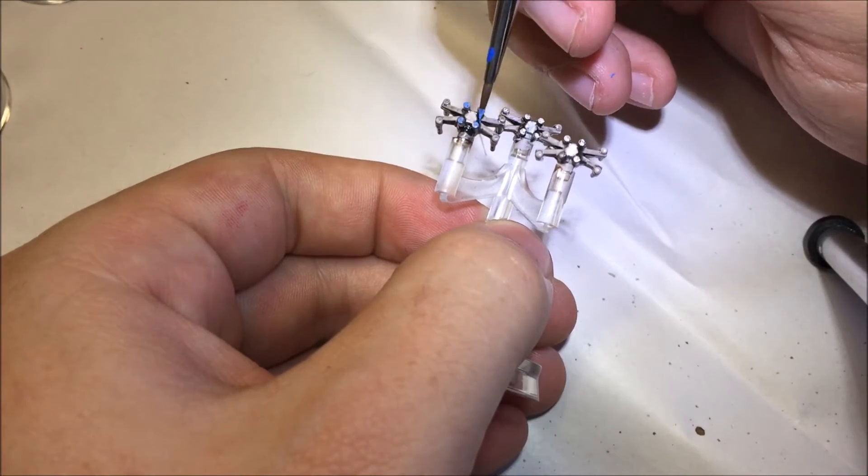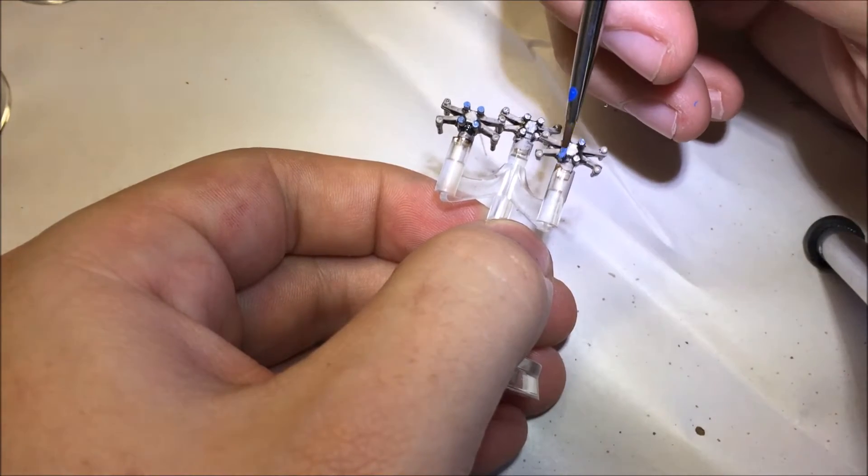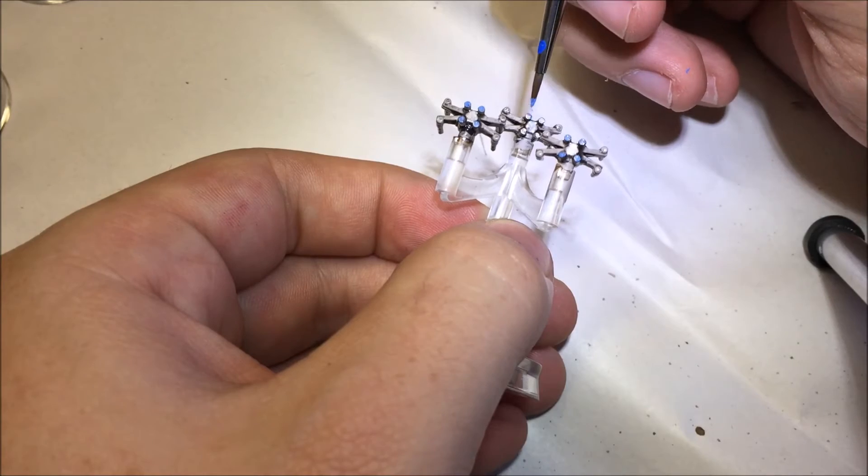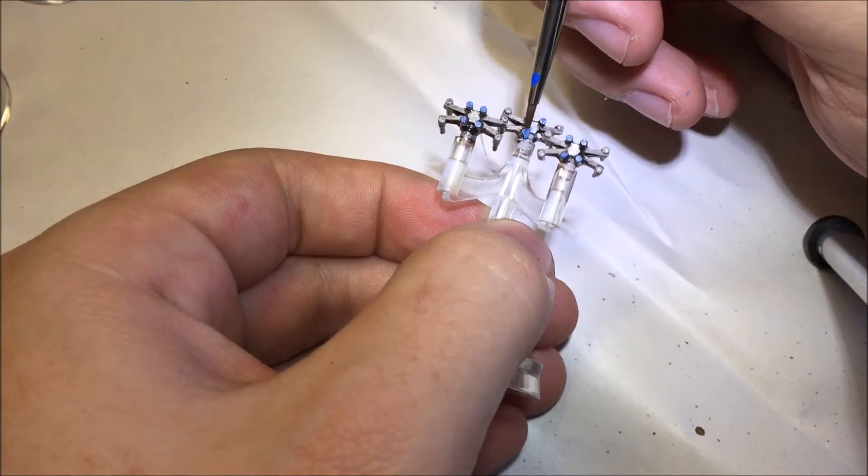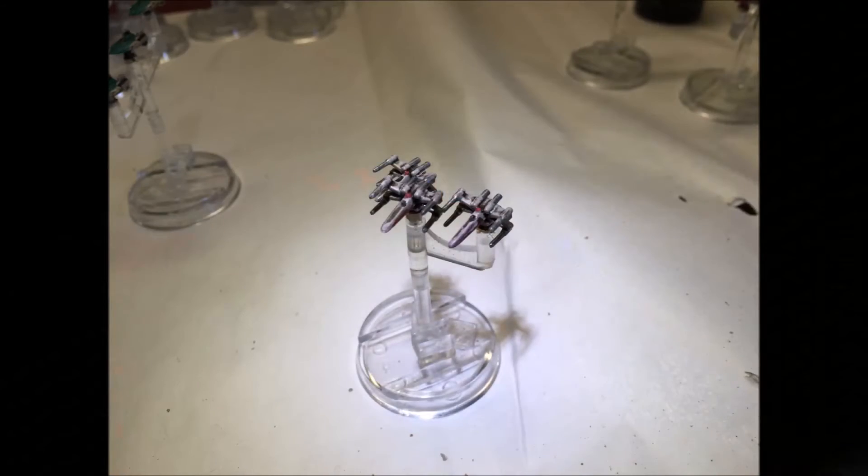The last step is to carefully place a blue dot on each of the engine exhausts. And there we have it, our completed X-Wing.